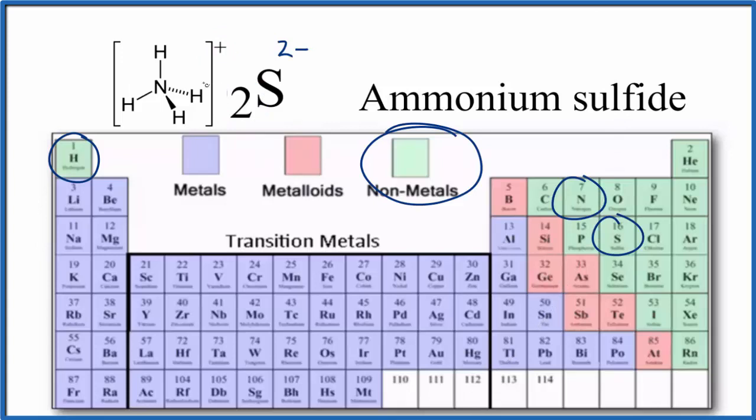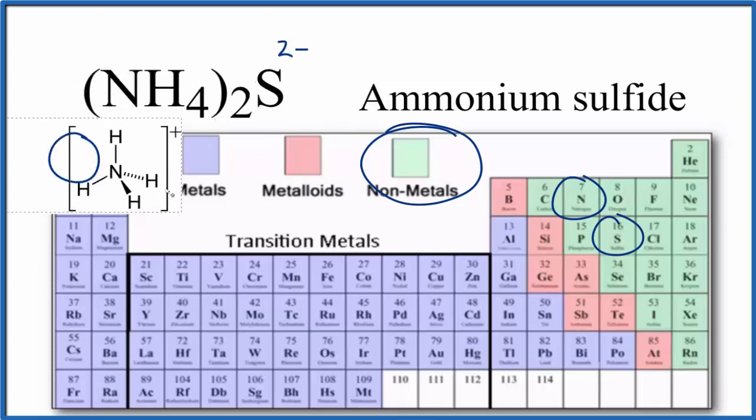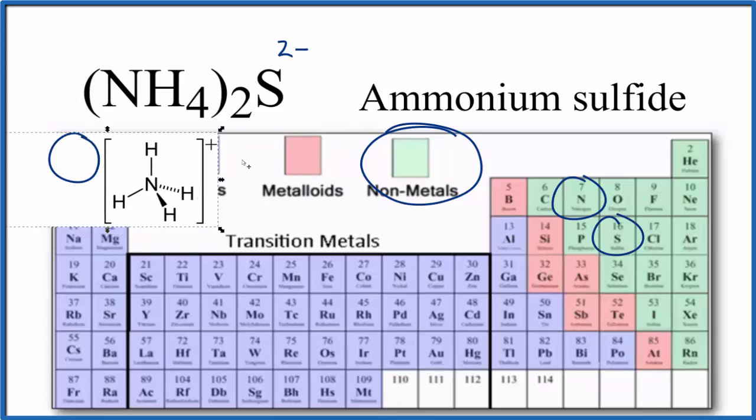Because we have positive charges and negative charges, they attract and they form an ionic bond. So in answer to our question, NH₄₂S, this ammonium sulfide is an ionic compound.